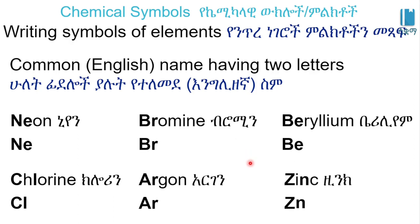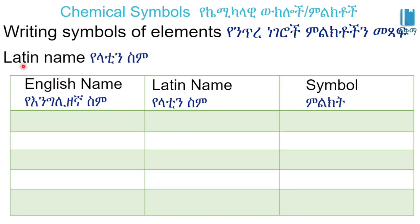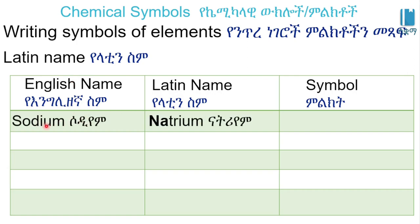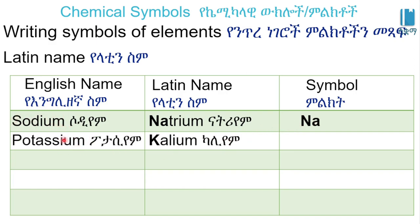However, there is a change when the English name differs from the original. Usually when the modern English name differs, the symbol comes from Latin or another language. For example, potassium — the symbol for potassium is K, which comes from its Latin name.